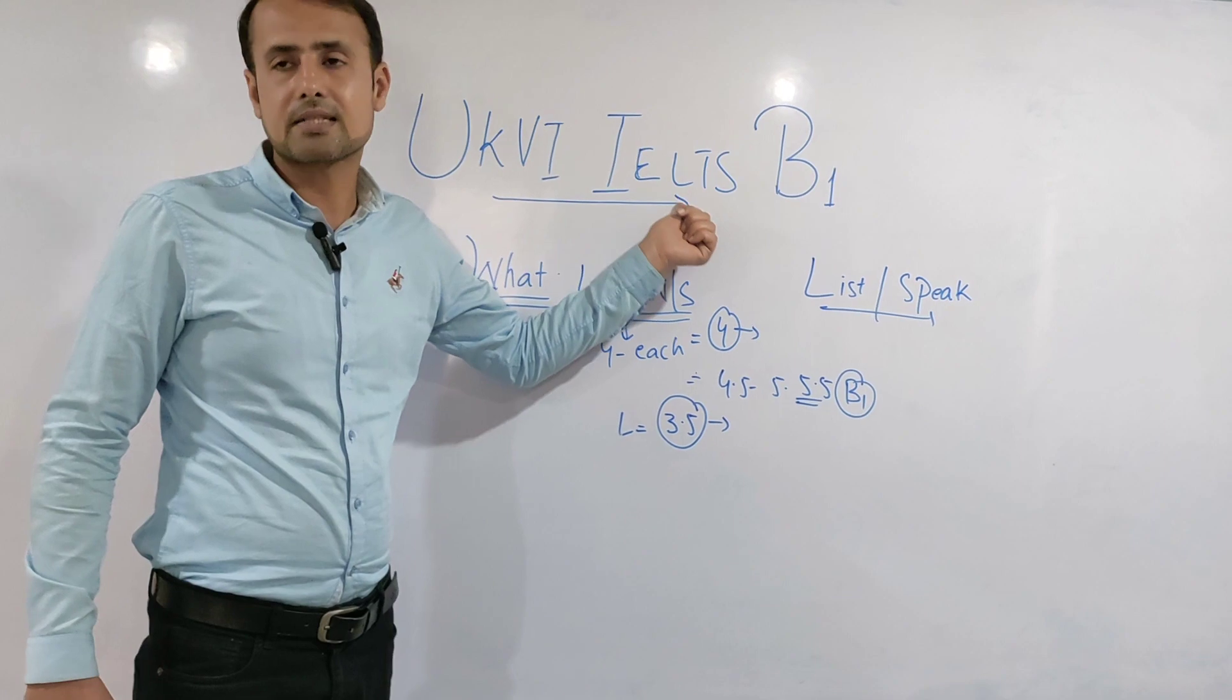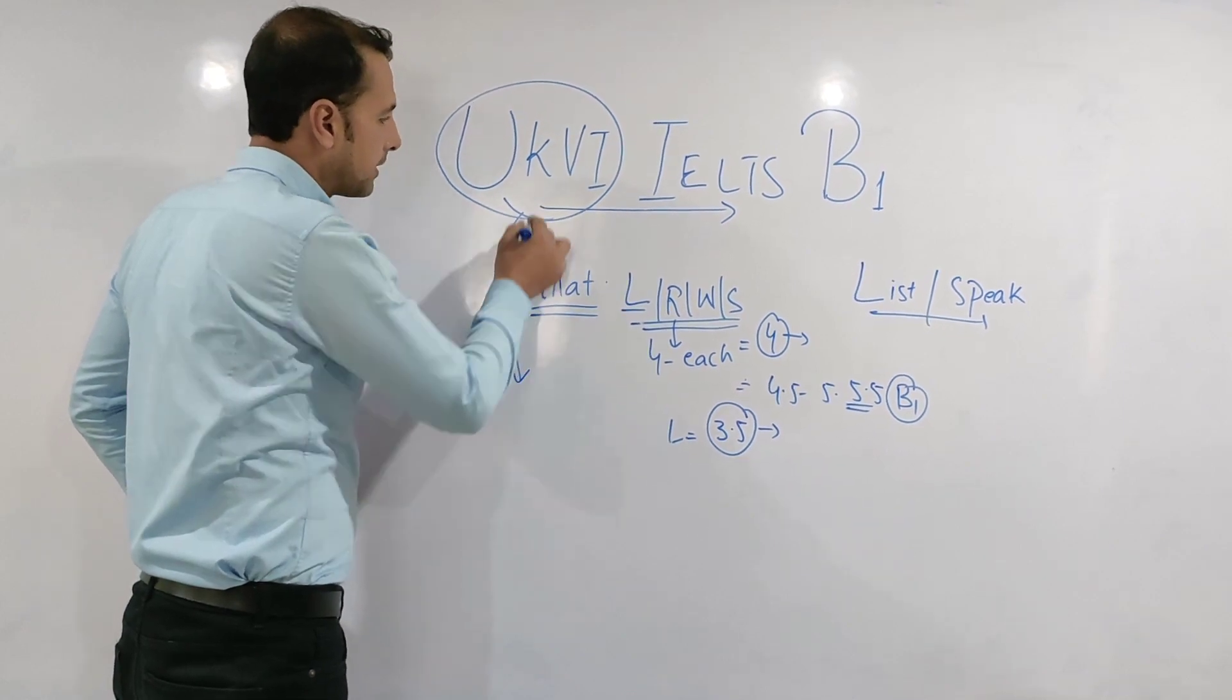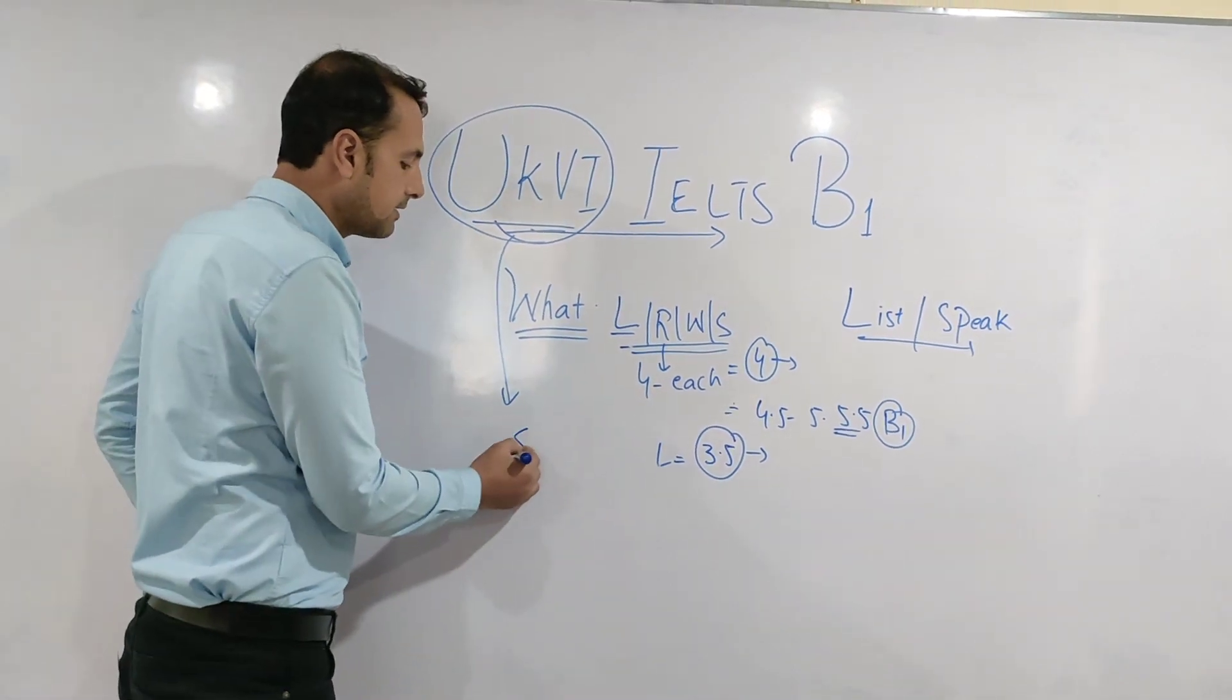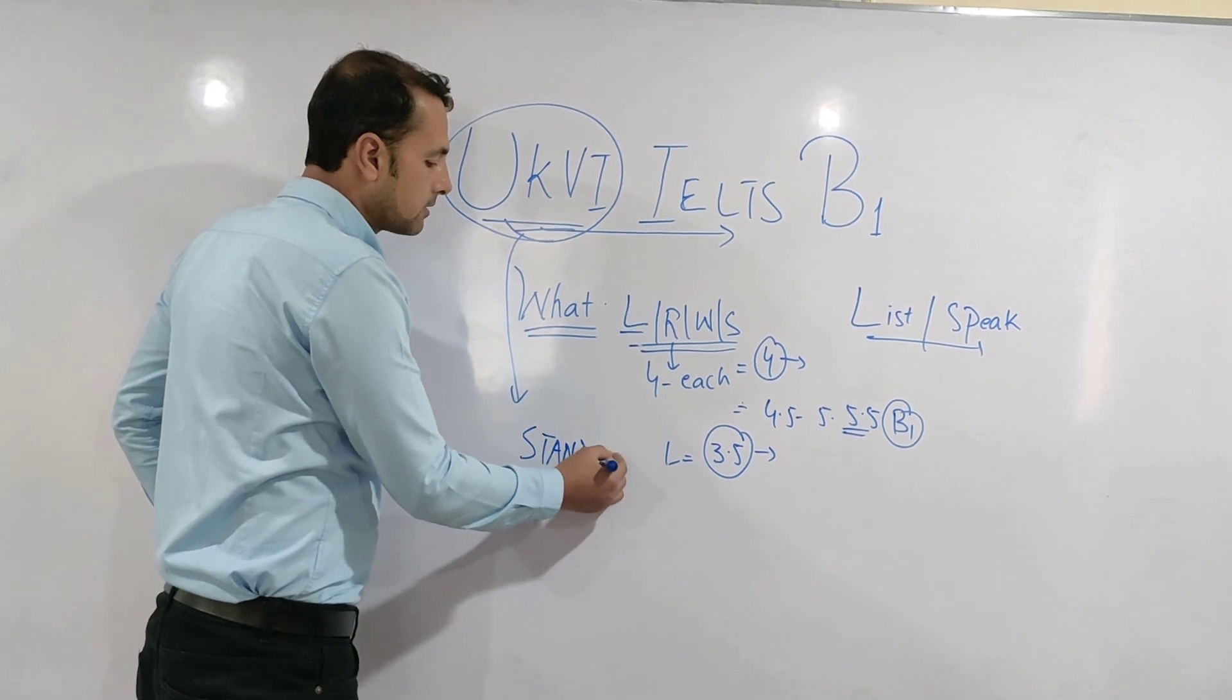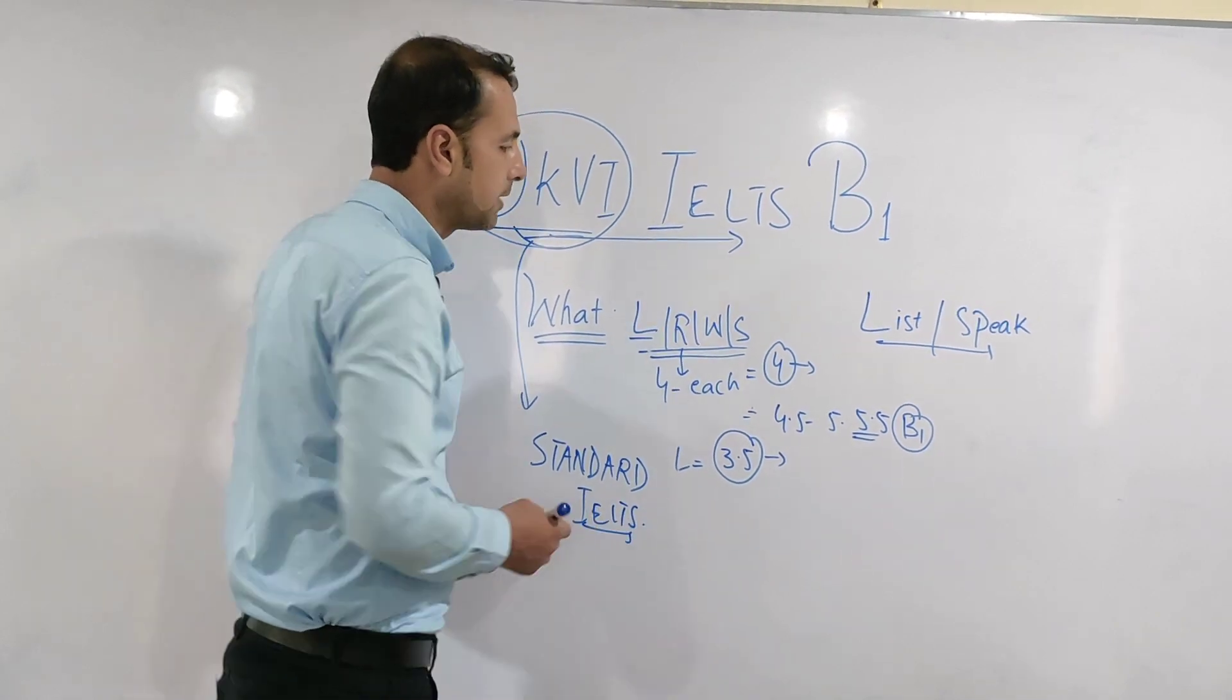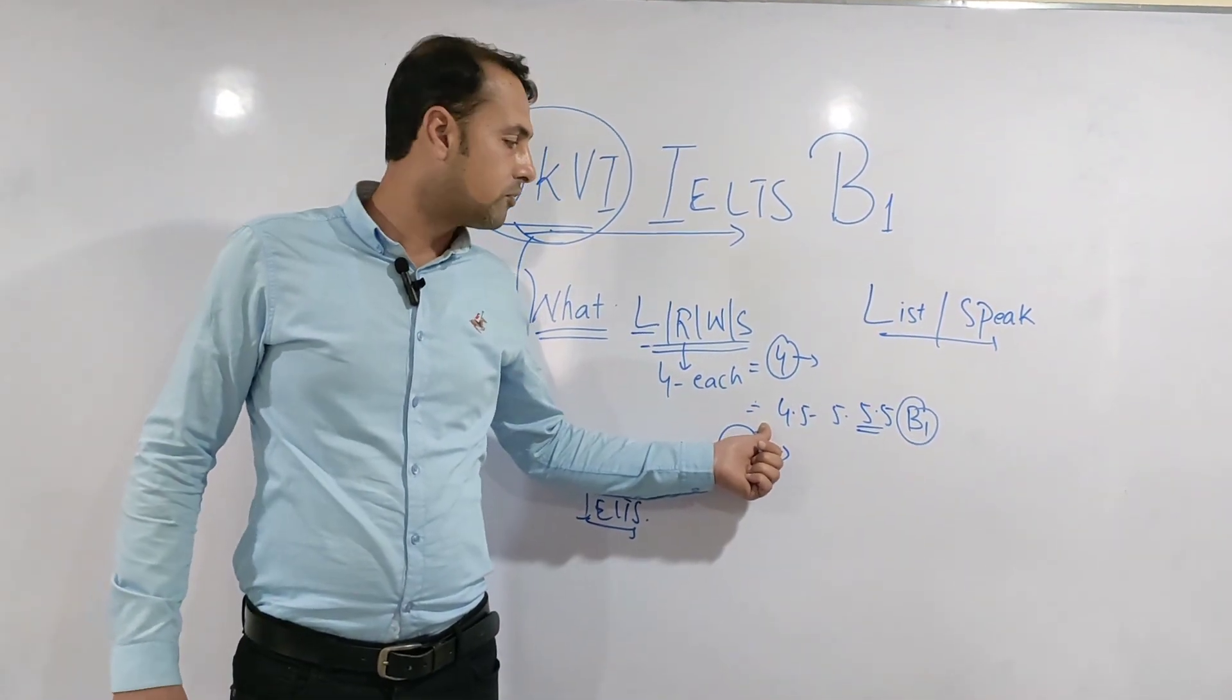Another reason is that whoever is taking a test for UK IELTS, they need to go through the UK IELTS test. If they appear in standard IELTS, even if they score beyond their requirement - like 6 or 6 plus, which is B2 level (B1 is from 4 to 5.5)...